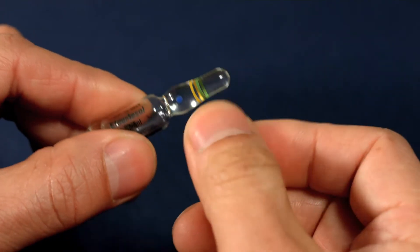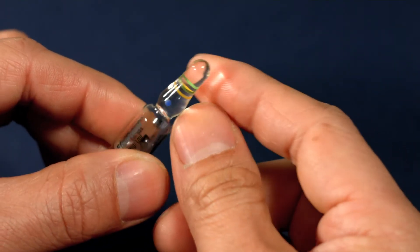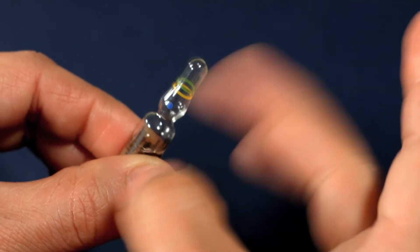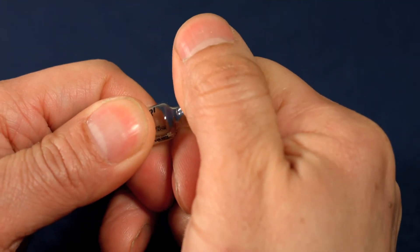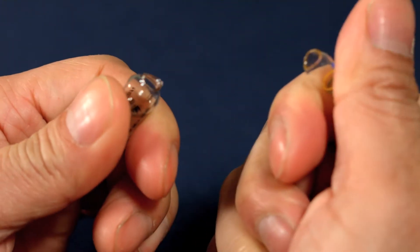Notice the blue dot. This is the breaking point. Tap the ampule to remove any liquid from the top. Now using the blue dot as a place for your thumb, snap the ampule away from you.